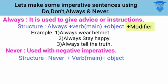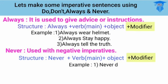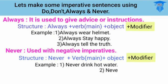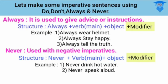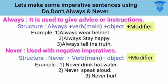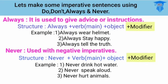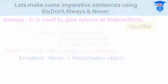For 'never,' it creates a negative imperative command. The formula is: never + verb one + object. For example: 'Never drink hot water' — tidak boleh minum air panas. 'Never speak aloud' — dilarang berbicara keras. That's all the material for today.